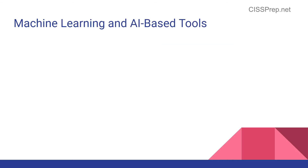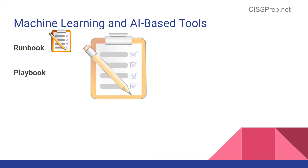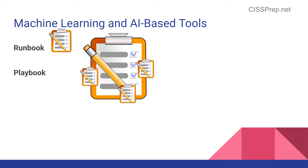Moving on, there are some other terms you'll need to consider for the exam. A runbook is how to complete a specific task, like resetting a user's password. A playbook, on the other hand, would contain multiple runbooks and is geared towards a bigger goal or scenario. Orchestration is basically the automation of something — in the context of CISSP, this would likely mean automating log management tasks using runbooks and playbooks.